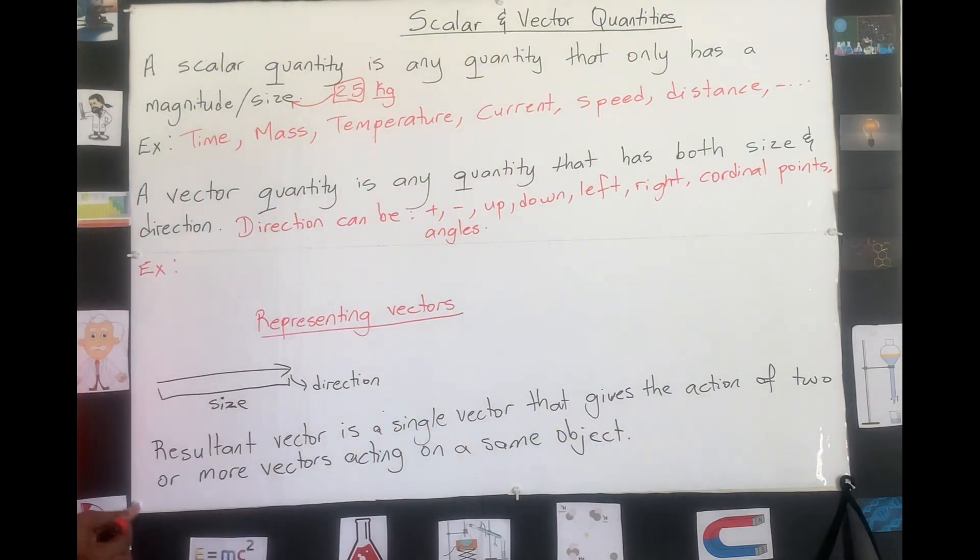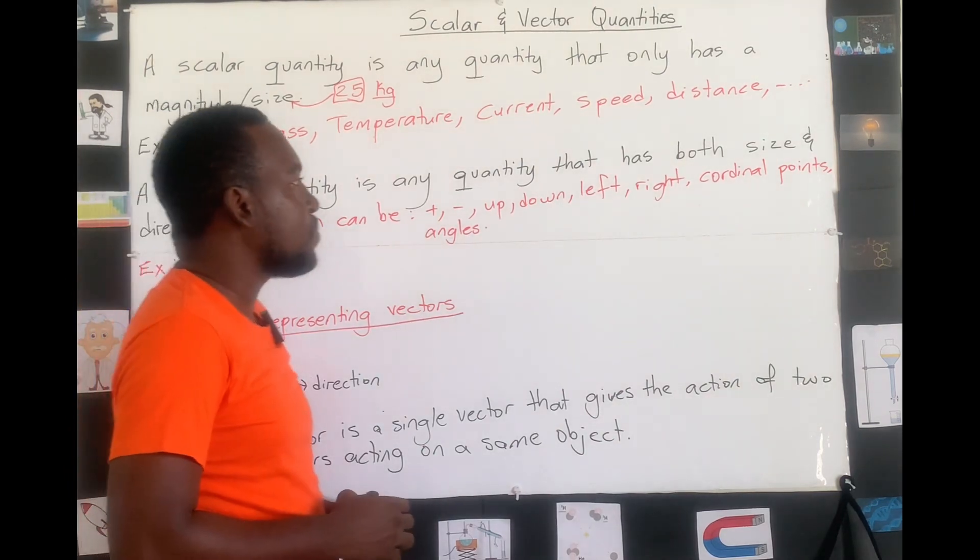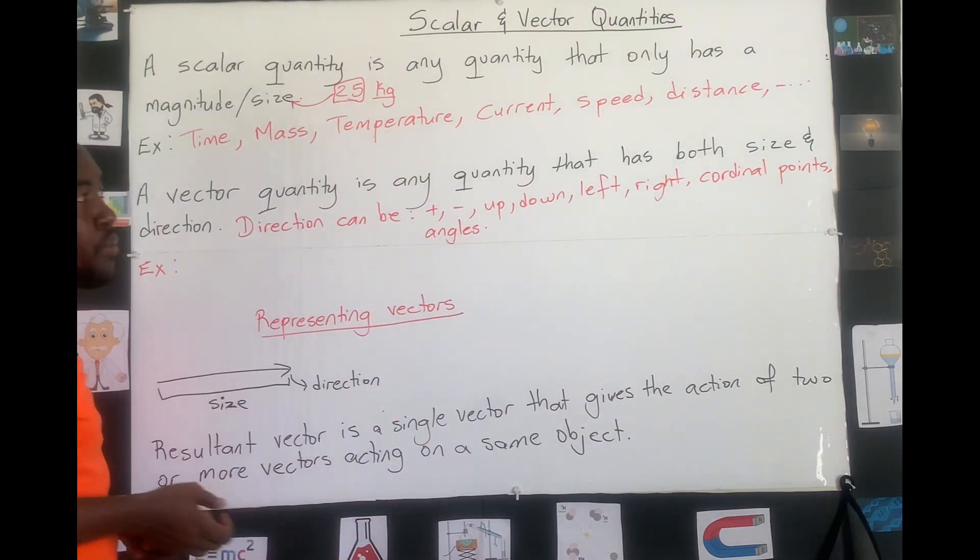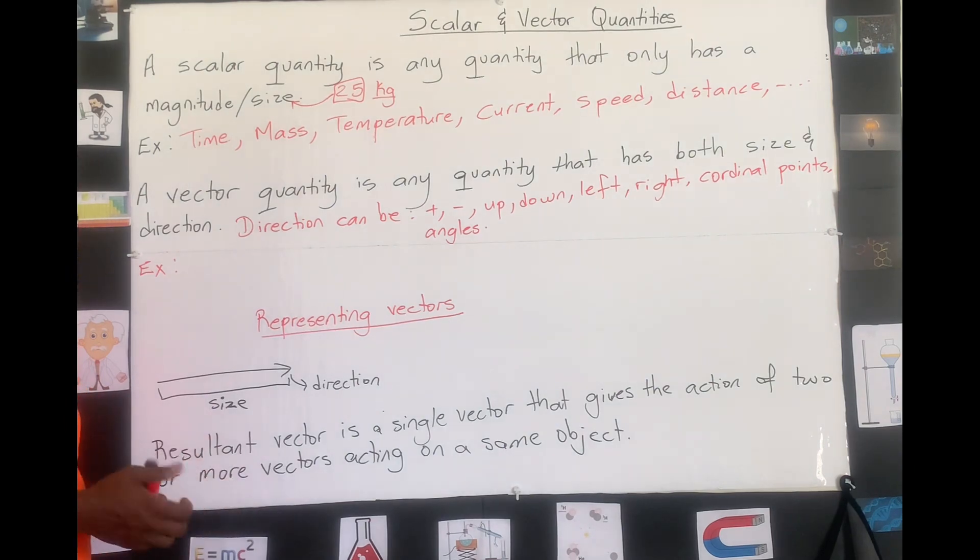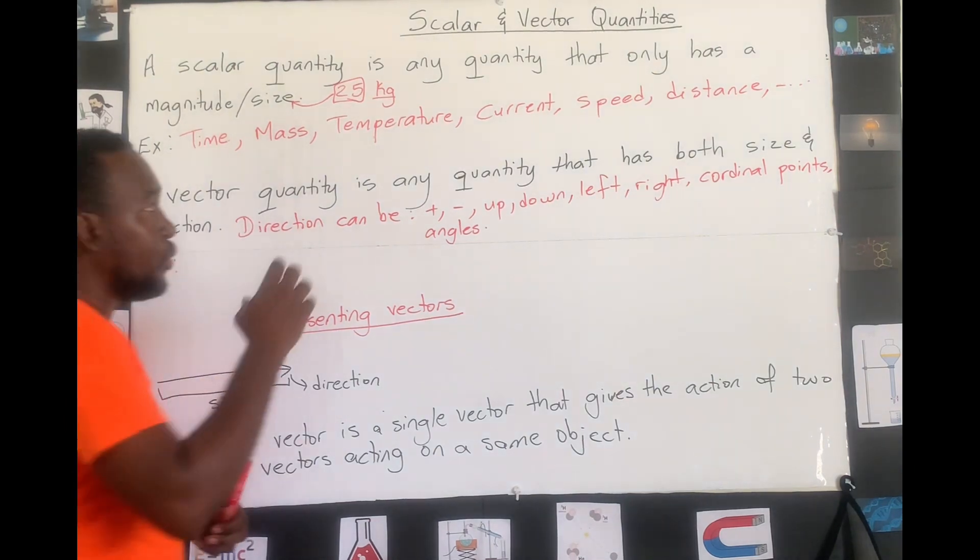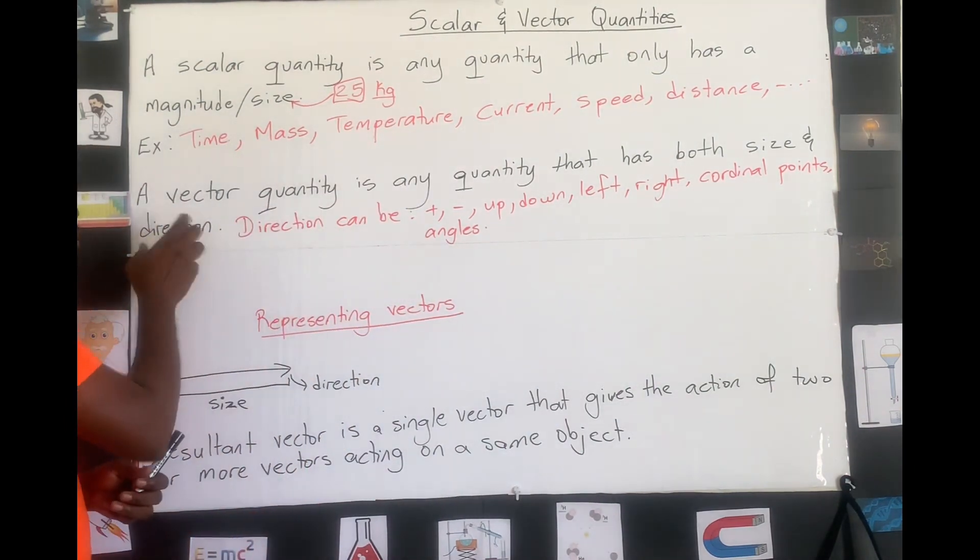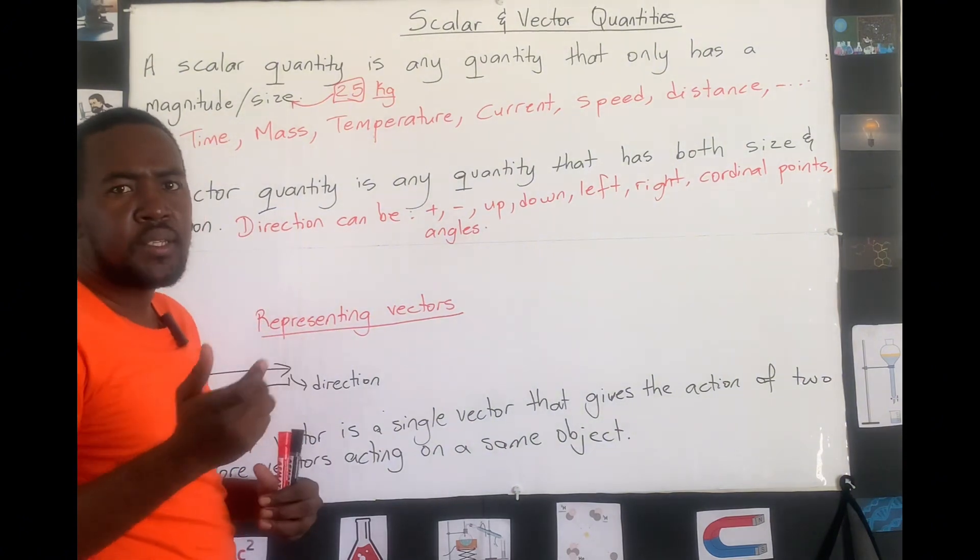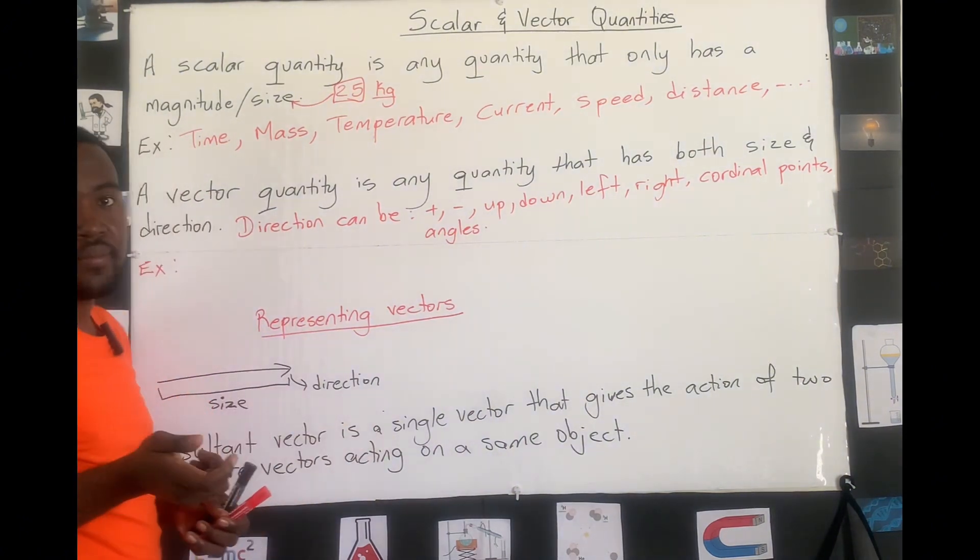On the contrary, our vector quantities, these are quantities that have both size and direction. Size and direction means we give it a number, but we also tell us what direction is this quantity going.